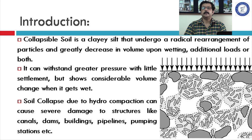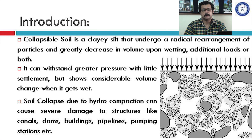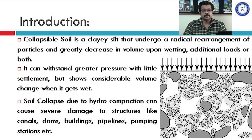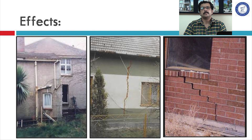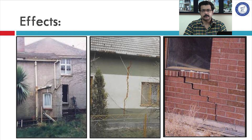A similar reduction in volume occurs when the soil is subjected to additional loads. So the two situations responsible for collapse are wetting and additional load. When dry, this soil can withstand greater pressure with little settlement, but when it comes in contact with water there will be large settlement and collapse. This collapse and settlement may cause damage to various civil structures such as pipelines, pumping stations, buildings, dams, canals, and many more.